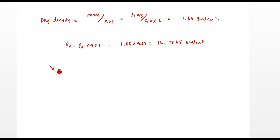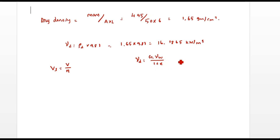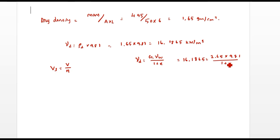The seepage velocity Vs = V / N. To find N, we first find the void ratio E using the formula: γd = (G × γw) / (1 + E). Substituting γd = 16.1865, G = 2.65, and γw = 9.81, the only unknown is E. Solving, we get E = 0.606.